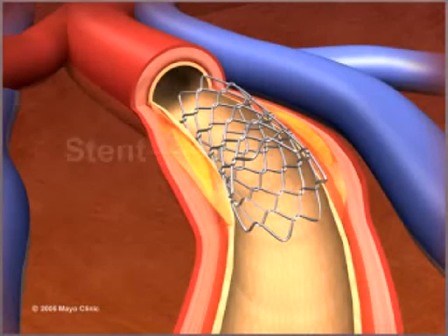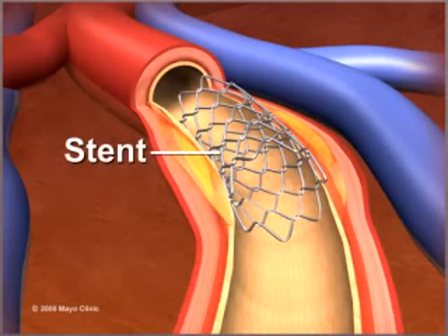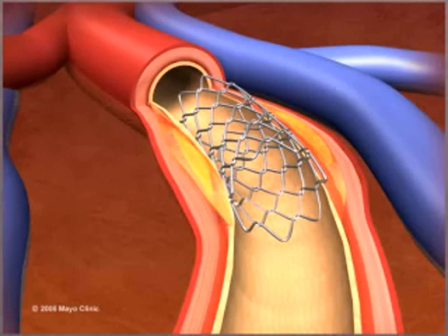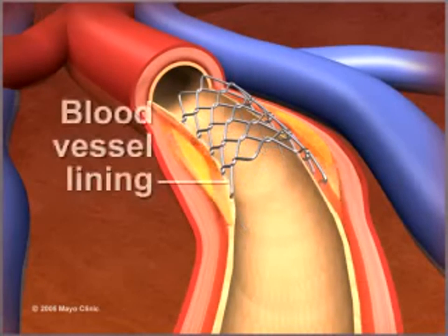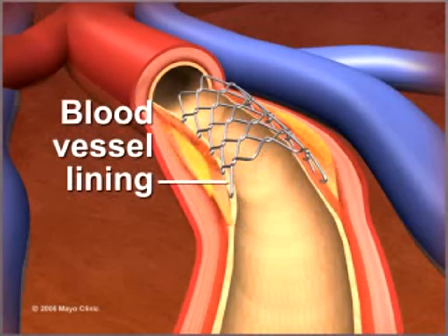About 70 to 90% of coronary angioplasty includes placement of a stent, a wire mesh tube that holds open weakened arteries. The stent may prevent re-narrowing after an artery is widened, and it stays in place permanently as the blood vessel lining heals over it.